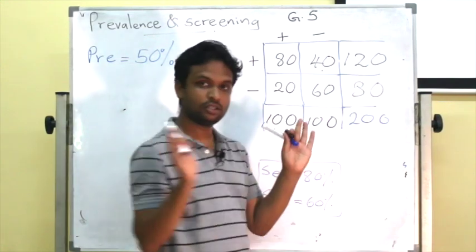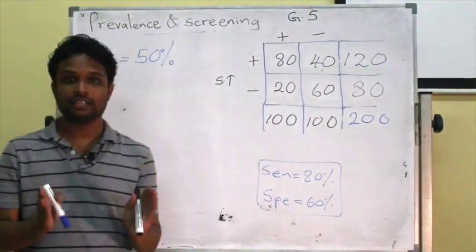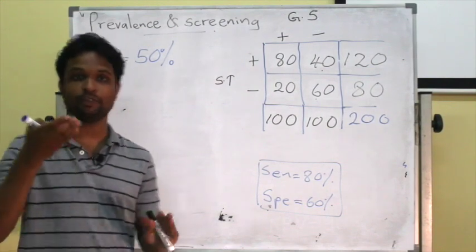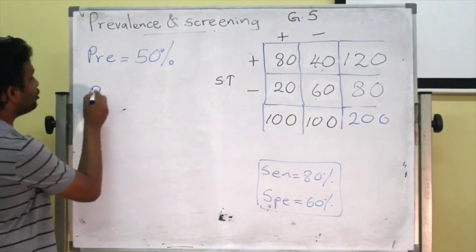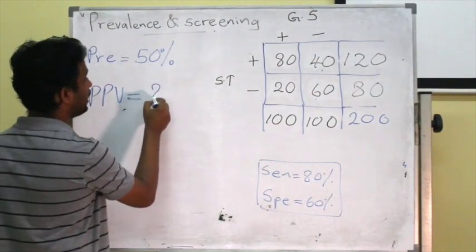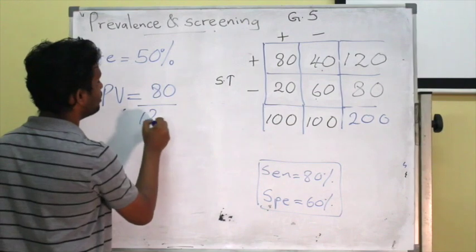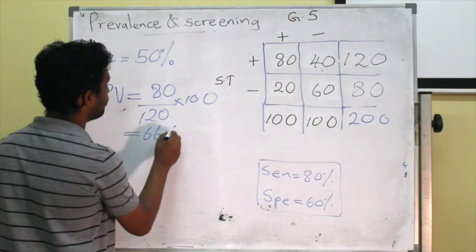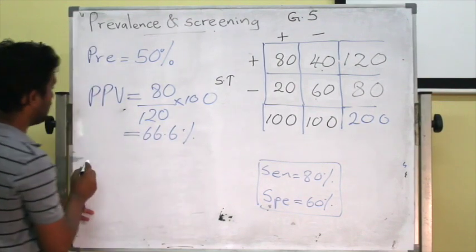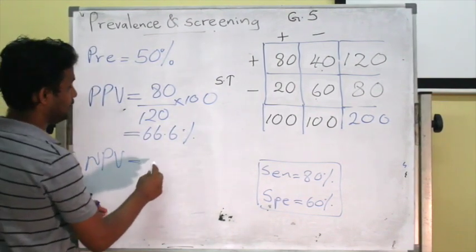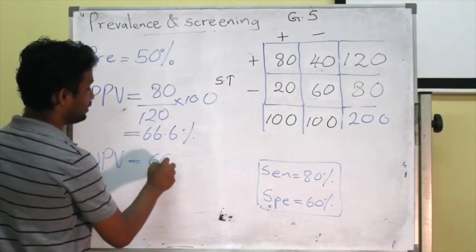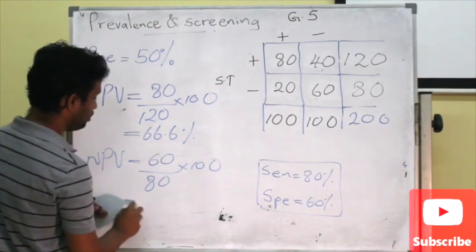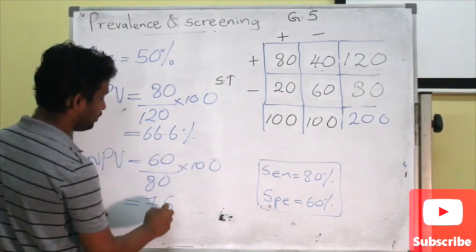120 plus 80 equals 200 — correct. Positive predictive value is 80 over 120 multiplied by 100, which equals 66.6%. Negative predictive value is 60 over 80 multiplied by 100, which equals 75%.